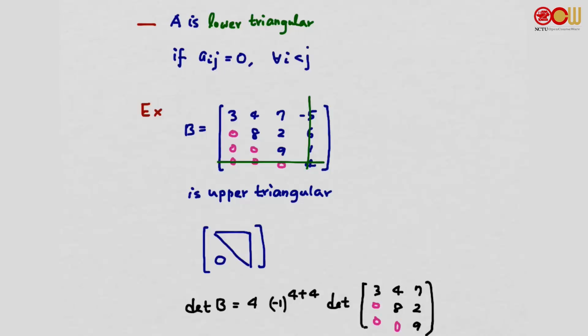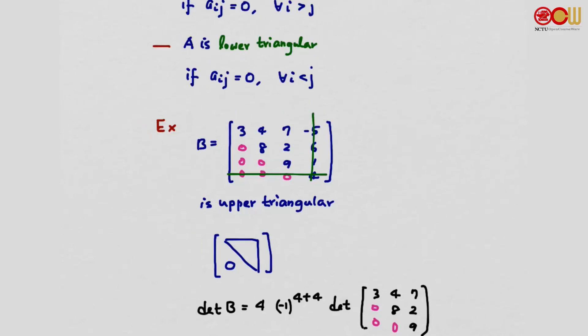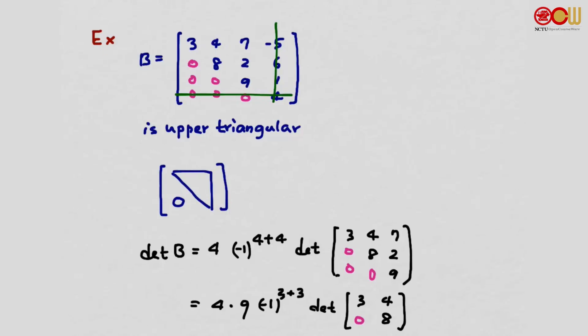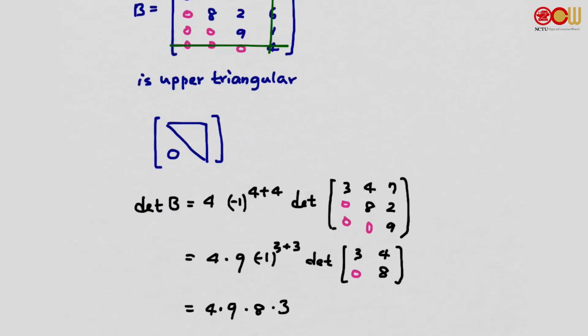If we want to compute the determinant for such a submatrix, which row would be a good idea to choose? Again, the last row, because we have an upper triangular matrix again. If we do cofactor expansion along the last row, we have 9 times (-1)^(3+3). This one equals 1, and the determinant of the rest is 3, 4, 0, 8. Now we can easily compute the determinant because we're down to size 2.